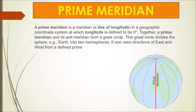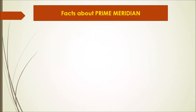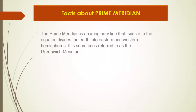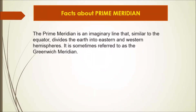A prime meridian is a meridian in a geographic coordinate system at which longitude is defined to be zero degrees. Together, a prime meridian and its anti-meridian form a great circle, which divides the Earth into two hemispheres using the directions of east and west.